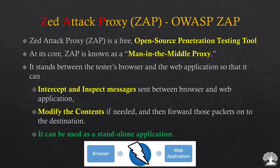ZAP is abbreviated as Z Attack Proxy, developed by OWASP — the Open Web Application Security Project. ZAP is a free, open-source penetration testing tool. ZAP is also known as a man-in-the-middle proxy because it sits between your browser (the client) and the web application. Being a man-in-the-middle proxy, ZAP can intercept and inspect messages, capture packets, modify their contents if needed, and forward those packets to the destination. It can also be used as a standalone application.